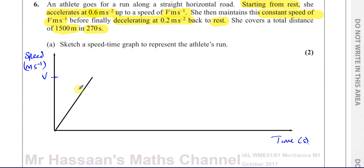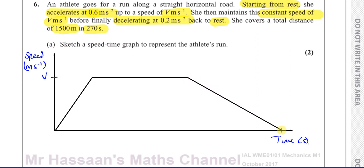We know the acceleration is 0.6. She maintains this speed of V meters per second for a while, and then decelerates with a deceleration whose magnitude is less than the acceleration we started with. So it's going to be a shallower slope until it comes to rest. The acceleration side must be steeper than the deceleration side — you must show that in your sketch. If you made both sides the same steepness, you will definitely lose a mark.